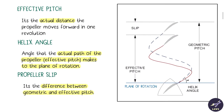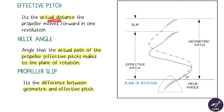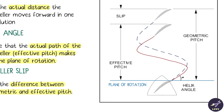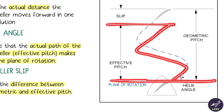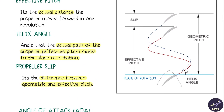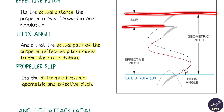Effective pitch is the actual distance the propeller moves forward in one revolution. The helix angle is the angle between the plane of rotation and the effective pitch. Propeller slip is the difference between the geometric pitch and the effective pitch.